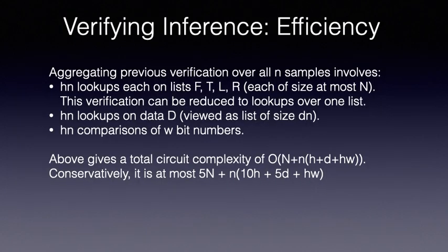Aggregate verification over all samples amounts to h times n lookups on lists f, t, l, r, each of size at most capital N. These can be reduced to verification over one combined list. As the access pattern here is the same, which is p. Secondly, we have hn lookups over data d viewed as a list of size dn. And finally, we have hn comparisons of w-bit numbers. Leveraging the memory access protocol, our overall circuit complexity is conservatively 5 times capital N plus small n times 10h plus 5d plus w, which vastly improves prior work as we discuss next.